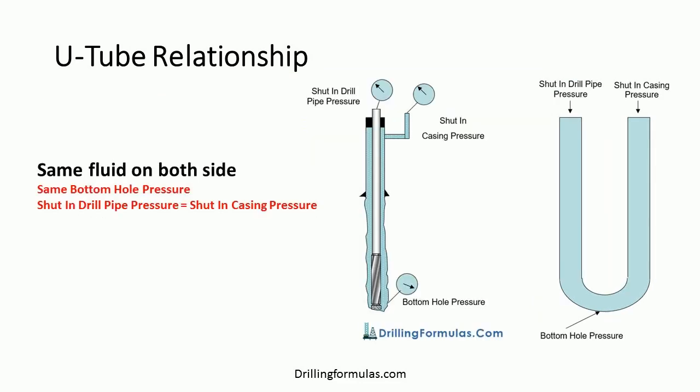If you have the same fluid in both sides, shut-in drill pipe pressure will be equal to shut-in casing pressure.